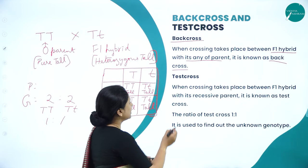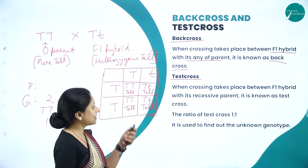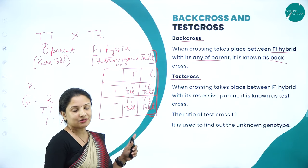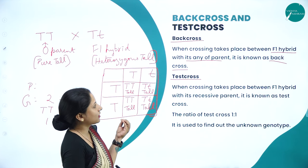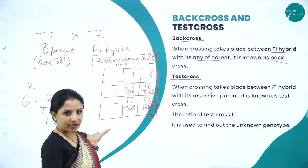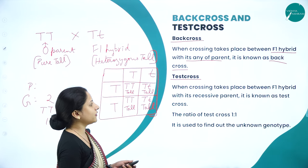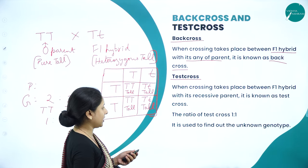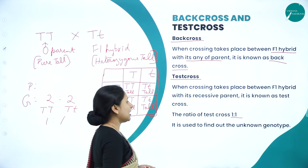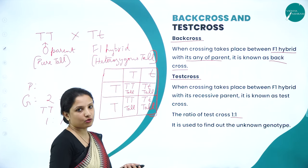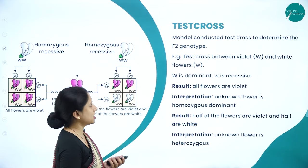In test cross, the F1 hybrid is crossed with its recessive parent — not the dominant parent as in back cross, but the recessive parent. The ratio in test cross is also 1:1, and it is used to find out the unknown genotype. We will look at the test cross in detail.